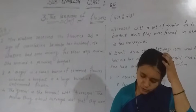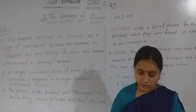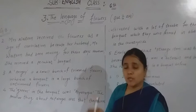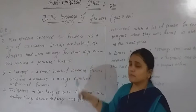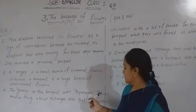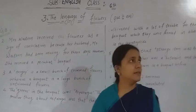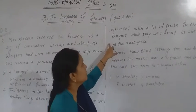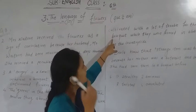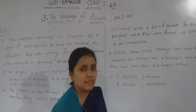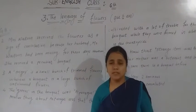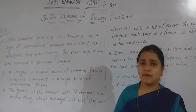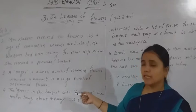Question four: what were the greens in the bouquet and what was peculiar about them? The greens in the bouquet were asparagus. The peculiar thing about the asparagus was that they were cultivated with a lot of trouble for the bouquet, while they grew in abundance in the countryside. Generally, florists never use asparagus in a bouquet, and it is not suitable for bouquets as it has thorns.